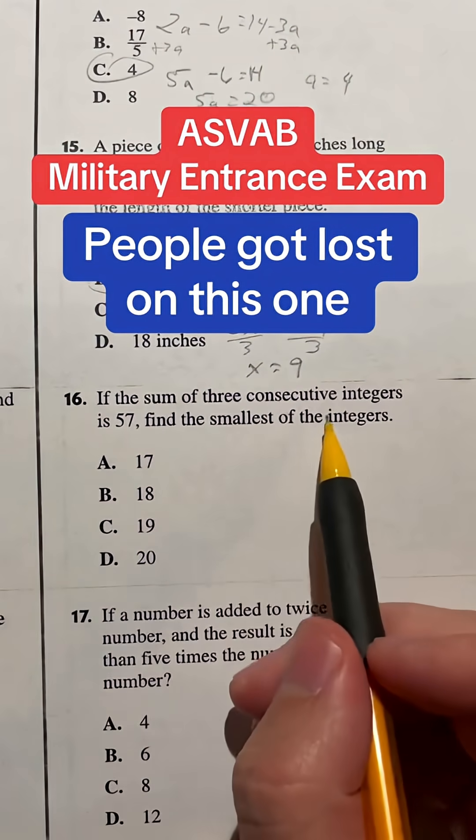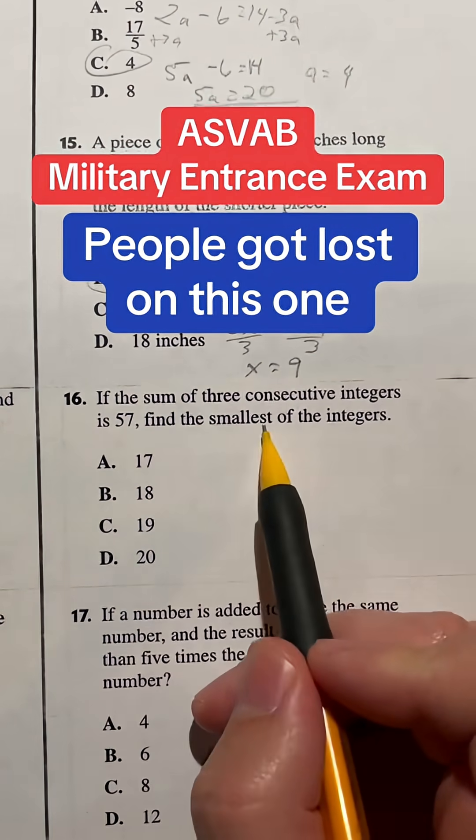Number 16 might take some brain power. It says, if the sum of three consecutive integers is 57, then find the smallest of the integers.